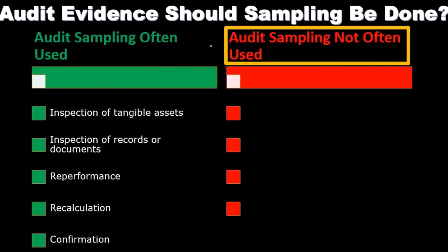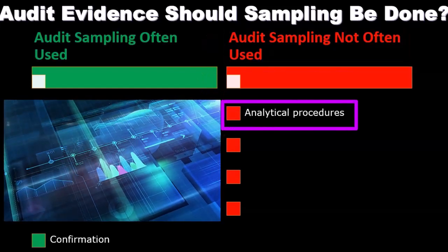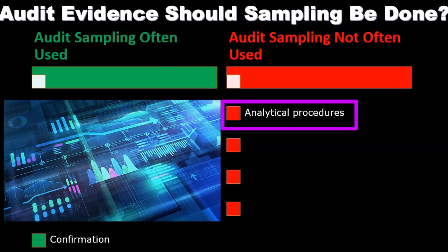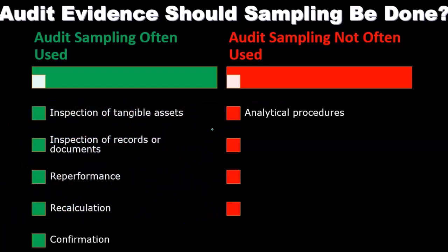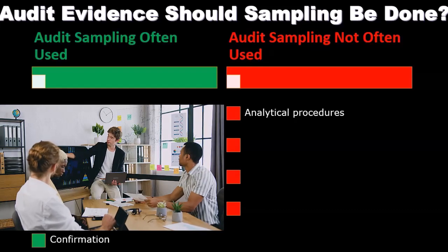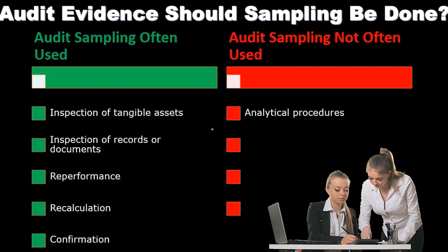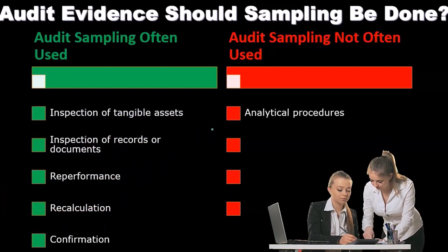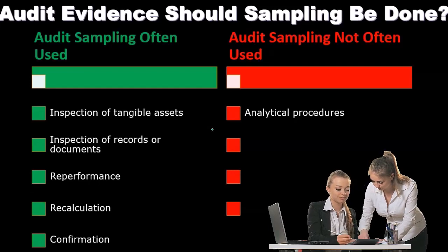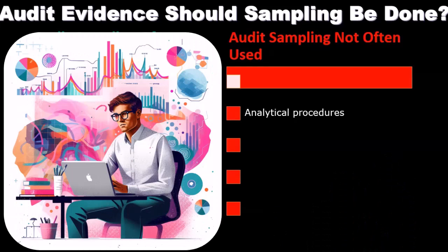Audit sampling is not often used for analytical procedures. Those are the things we can think of as basically being done in the office — comparing last year to this year, seeing the dollar changes and percentage changes, comparing to industry standards, doing ratio analysis. We don't typically do a sampling method there; we're basically comparing numbers and doing analytical types of procedures.